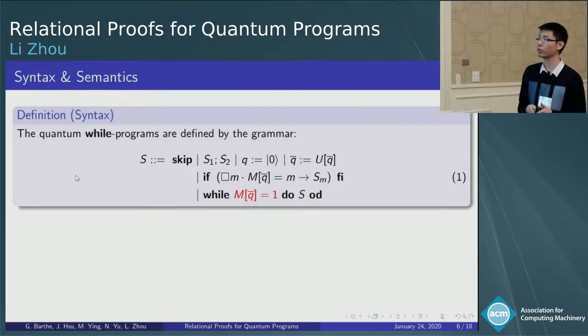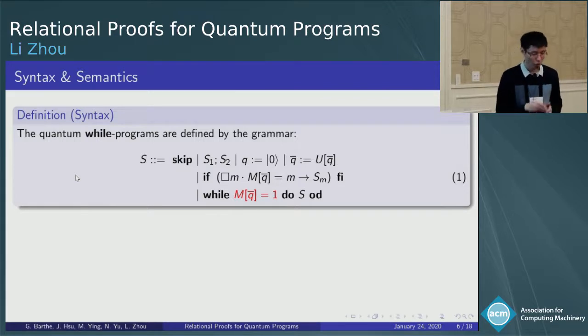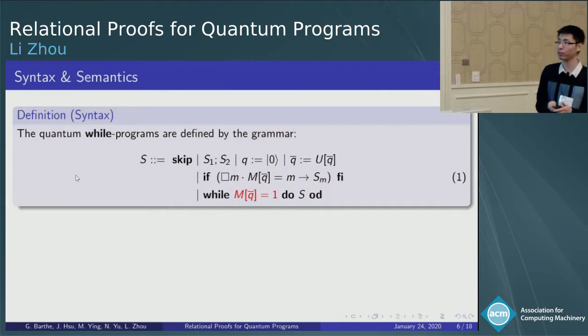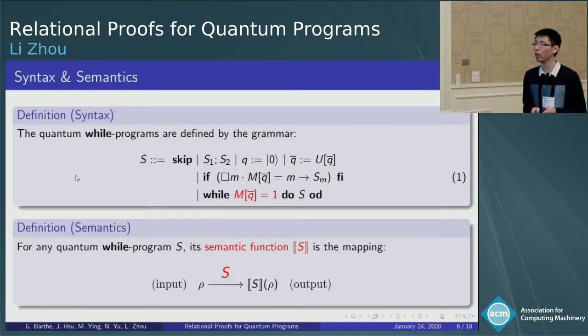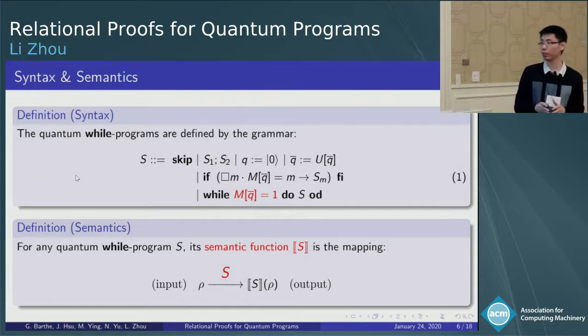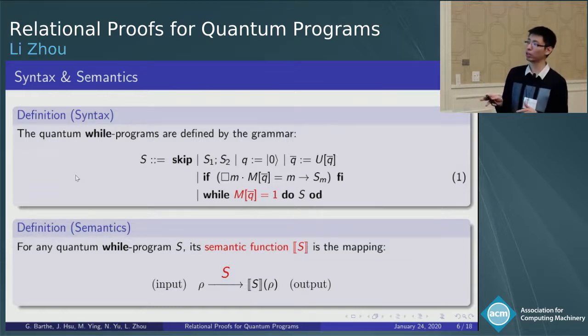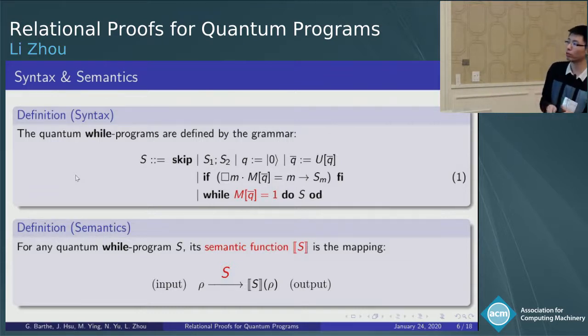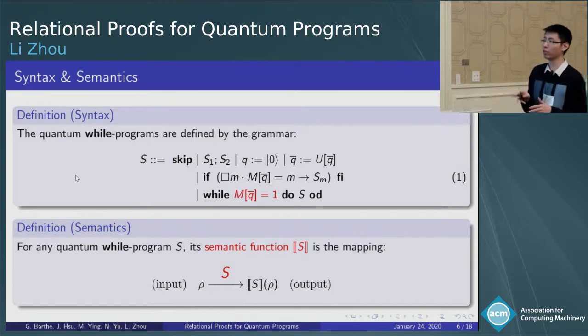It's worth noting that the quantum measurement will change the state. So we need to pay more attention to the if and while statements. For any quantum while program S, its semantic function is the mapping from quantum state to quantum state. Intuitively speaking, given input quantum state rho, the S rho stands for the output state after executing the program S.